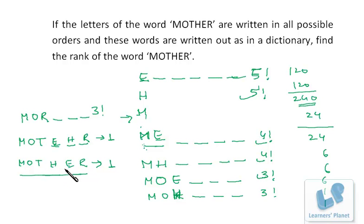I'm sorry friends, here I just forward here it is E, H, R, then here it will be E will be there and E, R, H will be there. E, R, H, then M, O, T, H, E, R. So it's one more over there.